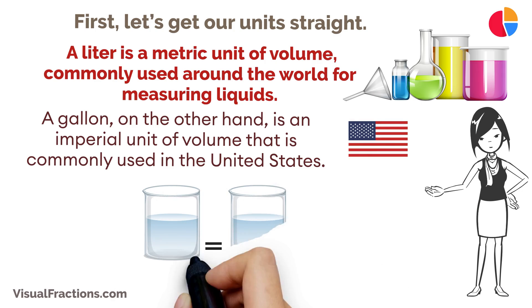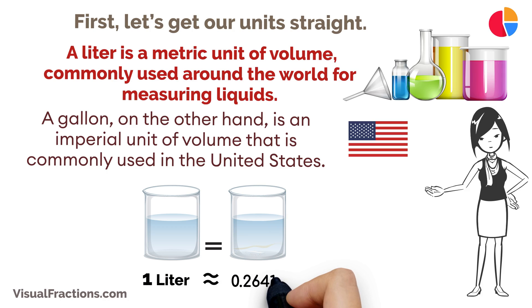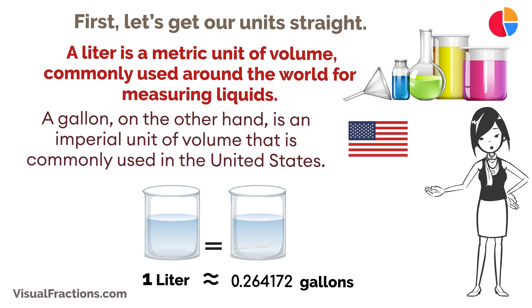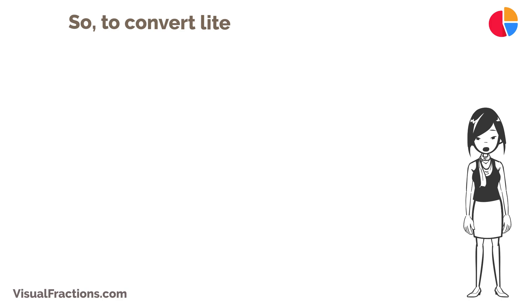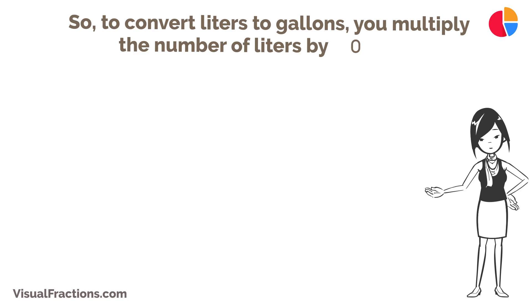One liter is approximately equivalent to 0.264172 gallons. So, to convert liters to gallons, you multiply the number of liters by 0.264172.